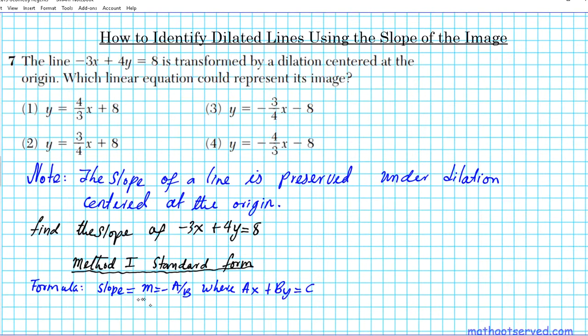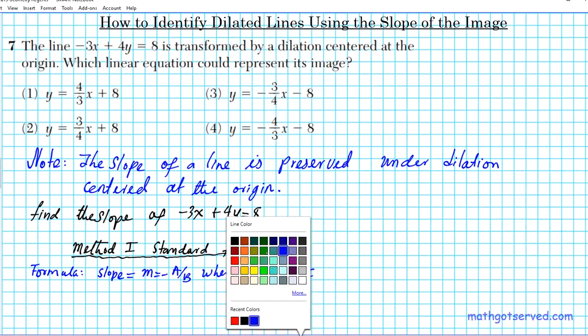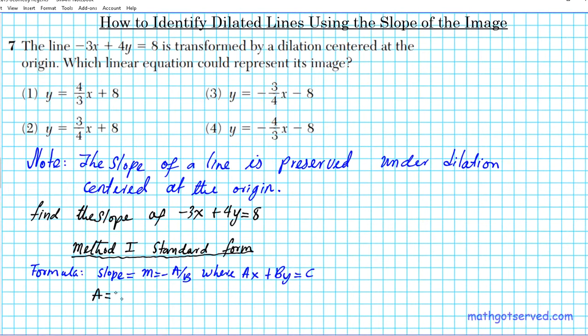The nice thing about this formula is that it is much faster. We just have to identify A and B and find the negative quotient. In this particular function, A is the coefficient of X, which is negative 3, and B is the coefficient of Y, which is 4.